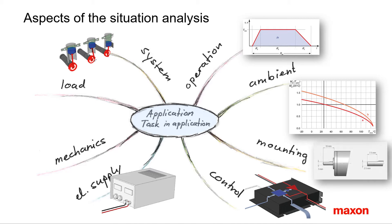Five: mounting conditions, which are also related to ambient — for example, cooling — but also cable length and fixation of the drive. Six: related to mounting is the mechanical layout. What kind of mechanical transformation is used? What are the transformation parameters — for example, reduction, efficiency, friction?